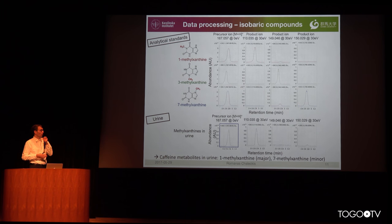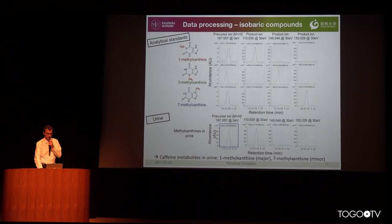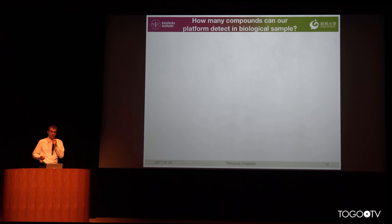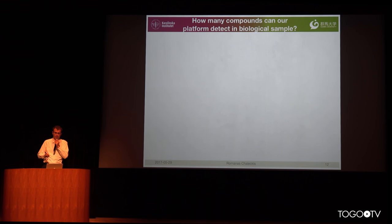I hope this convinces you that identification by more than two parameters — in our case ideally four — can increase the specificity of identification. Of course it's still not absolute and not all molecules can be distinguished this way. Biologists often ask us: okay, fine, but how many compounds can your platform detect in biological samples?